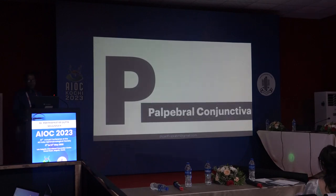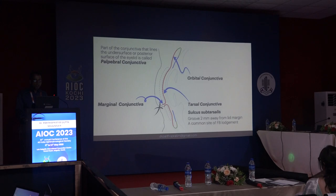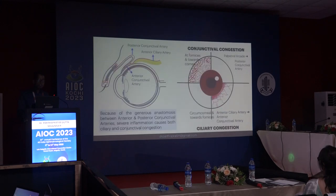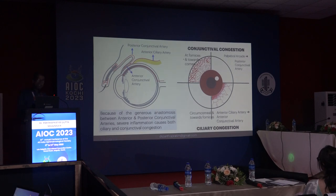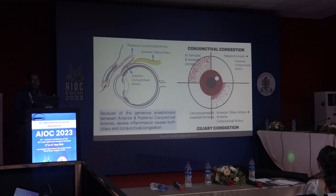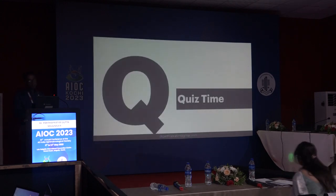P for palpebral conjunctiva. The posterior conjunctival arteries and anterior ciliary arteries occupy the muscular territory. Conjunctival congestion occurs at the fornices and towards the cornea due to the palpebral arcade and posterior conjunctival arteries. Circumcorneal or ciliary congestion occurs due to the anterior ciliary artery and anterior conjunctival vessels.